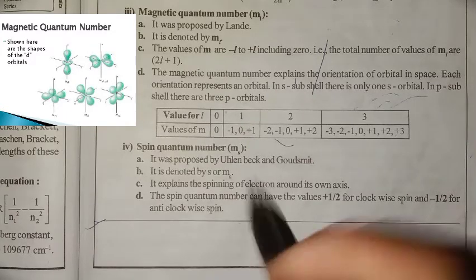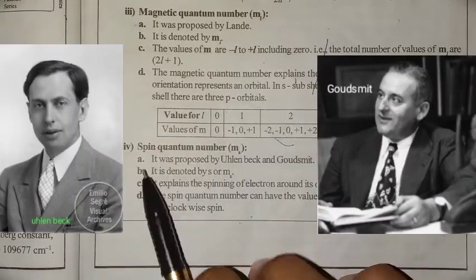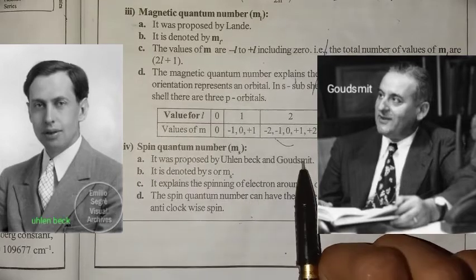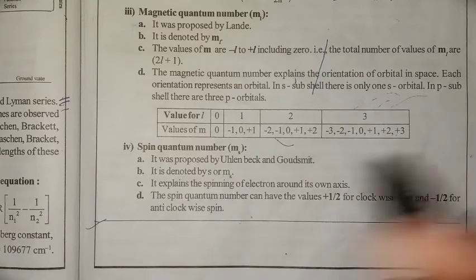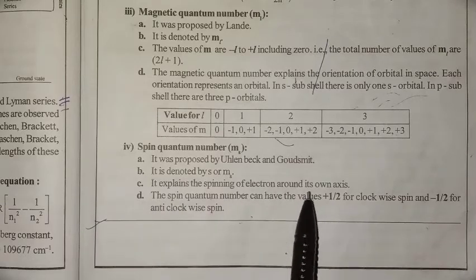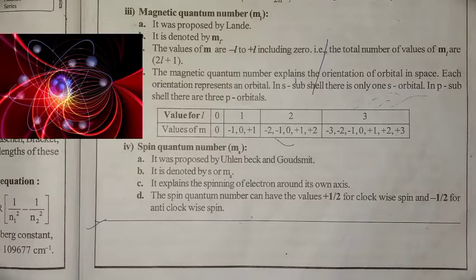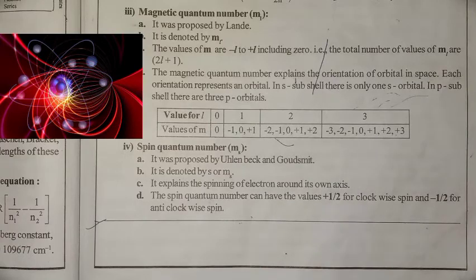Fourth quantum number: the spin quantum number, denoted by S or Ms. It was proposed by Uhlenbeck and Goudsmit. It explains the spinning of electrons around their own path.